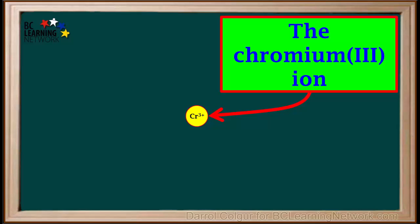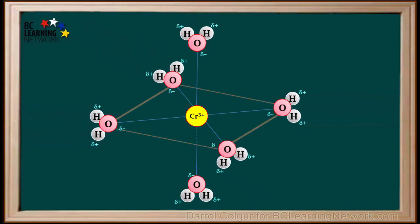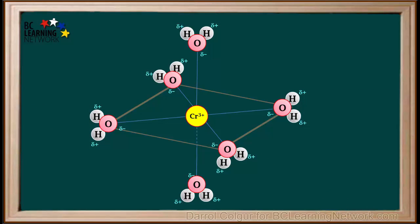We'll have a look at what happens to a chromium 3 ion when it is added to water. The Cr3+ ion attracts the negative oxygen ends of six water molecules, forming this ion. Water molecules have a net charge of zero.